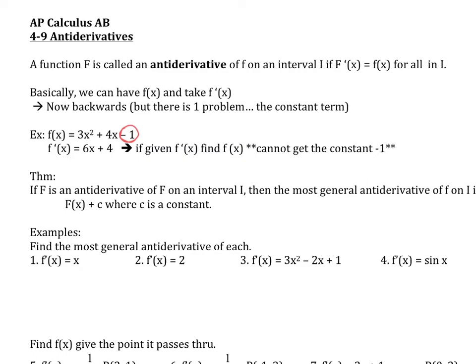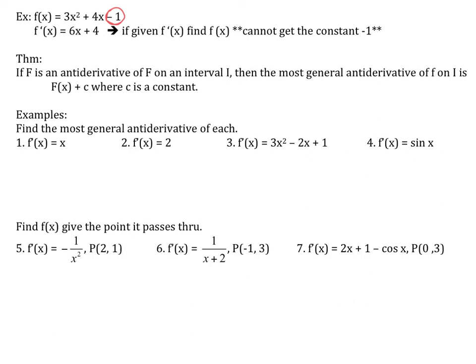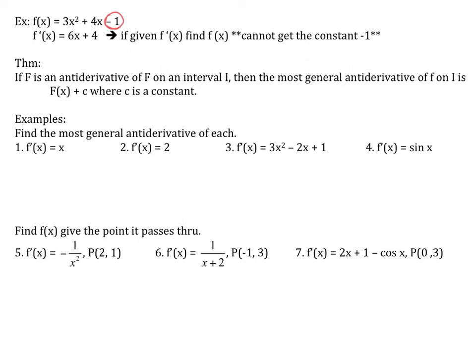If F is an antiderivative of f on an interval i, then the most general antiderivative of f on i is F of x plus C, where C is a constant. Later in chapter 5, we'll learn a symbol for the antiderivative — it looks like an elongated S — and we also call it the integral. But right now, we're just finding antiderivatives.